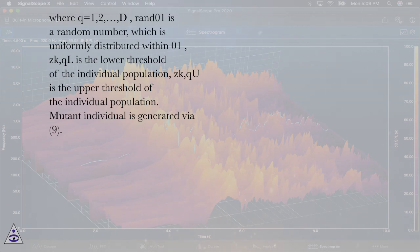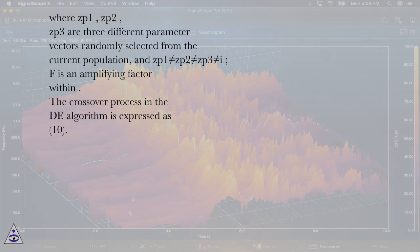Mutant individual is generated via equation (9), where Zp1, Zp2, Zp3 are three different parameter vectors randomly selected from the current population, and p1≠p2≠p3≠i. F is an amplifying factor.